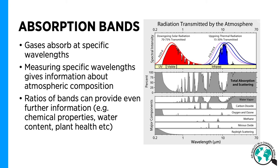Furthermore, by taking certain ratios of bands, we can get even further information about the target's properties — for example, chemical properties, water content, the health of leaves, and much more.